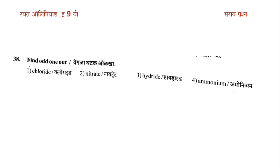The next question is find the odd one out. The options are: chloride, nitrate, hydride, and ammonium. The answer is option 4: ammonium.